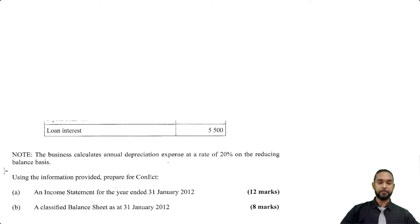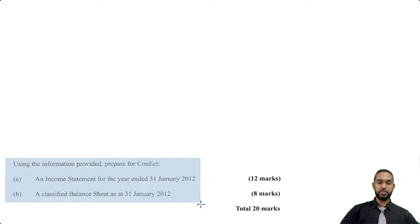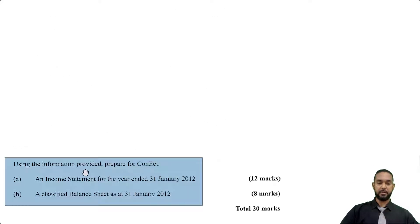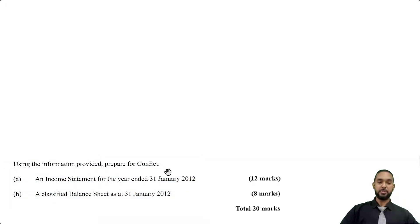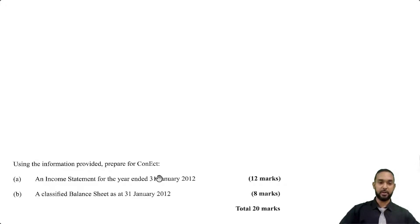Let's take a look at the requirement. It says: using the information provided, prepare for Connect an income statement for the year ended 31st Jan 2012 and a classified balance sheet as at that date. They were still using certain terms back in 2013, such as balance sheet and fixed assets, but because we have moved on from those terms, we will be using the more recent terms such as statement of financial position and non-current assets.